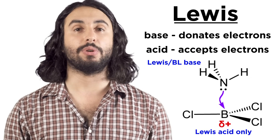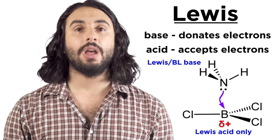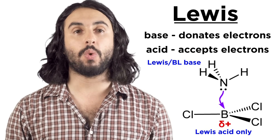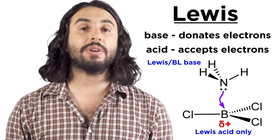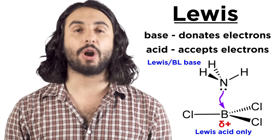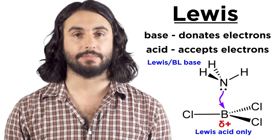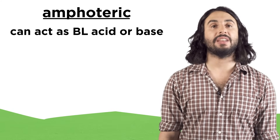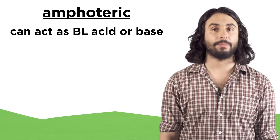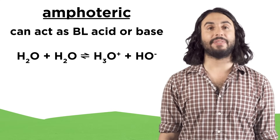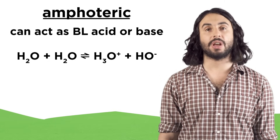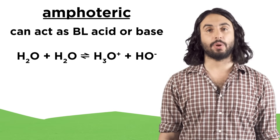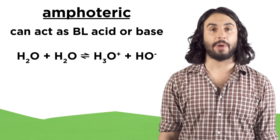A Lewis base is indistinguishable from a Bronsted-Lowry base, but the acids differ in the sense that a Bronsted-Lowry acid must have at least one hydrogen atom, while a Lewis acid just needs some partially positive atom. A species that can act as both a Bronsted-Lowry acid and base is said to be amphoteric.